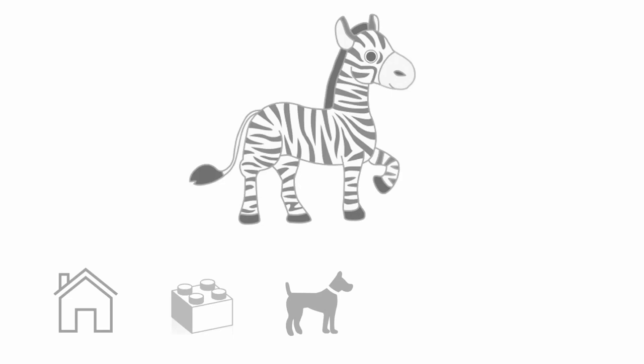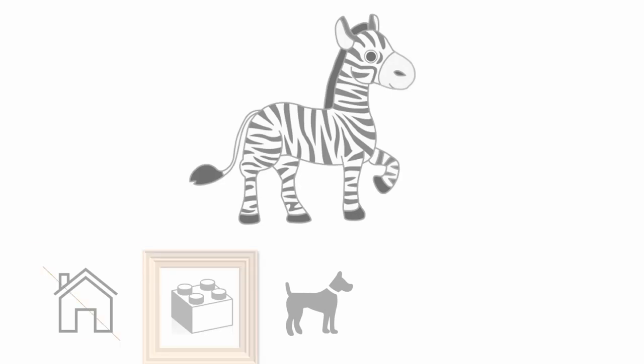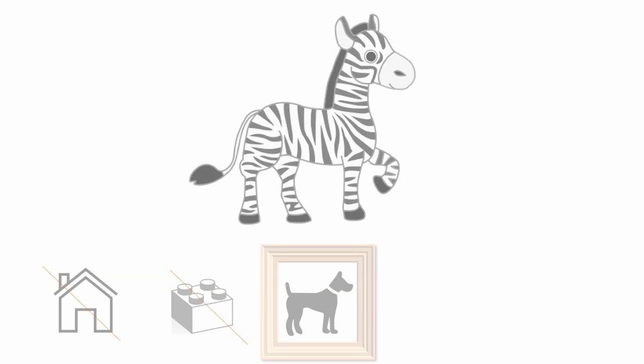He doesn't recognize this phenomenon as a house, so he rules that framework out. He also doesn't think that it could possibly be a toy, so he rules Legos out. However, his framework of a dog seems fitting — this phenomenon has four legs, a tail, and a face with ears.